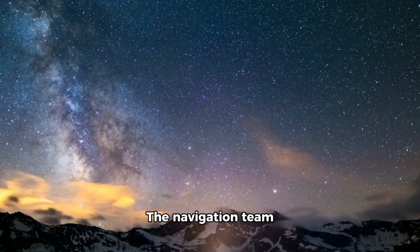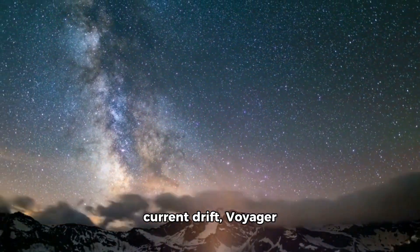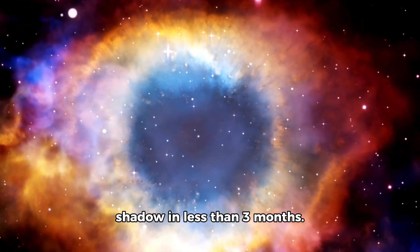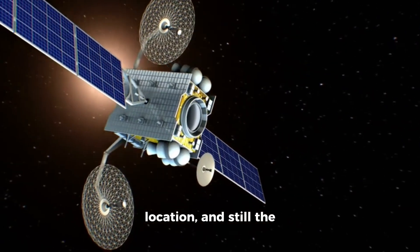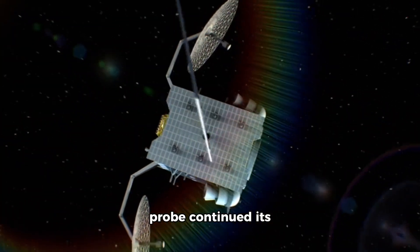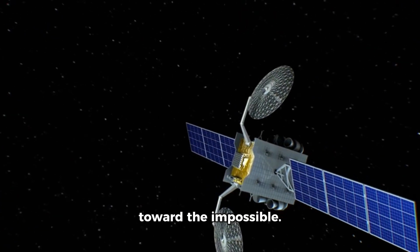The navigation team calculated that at its current drift, Voyager would intercept this shadow in less than three months. There were no known celestial bodies in that location, and still, the probe continued its silent, steady course toward the impossible.